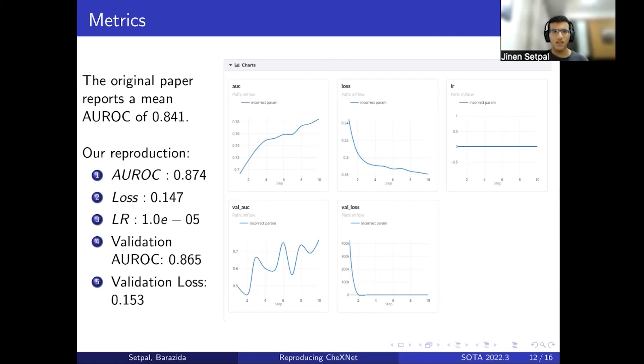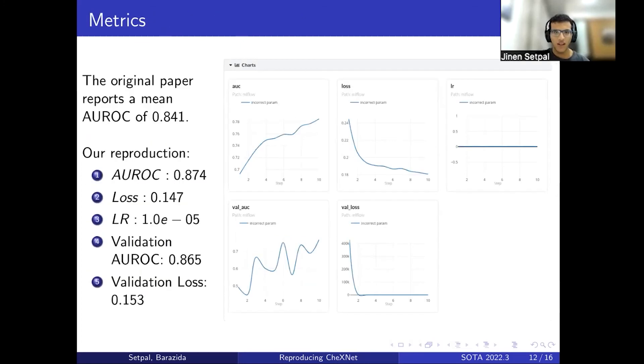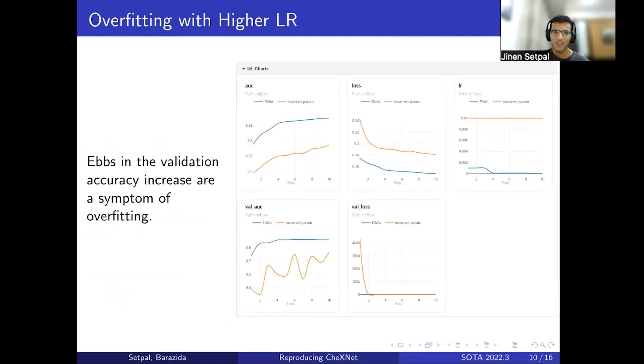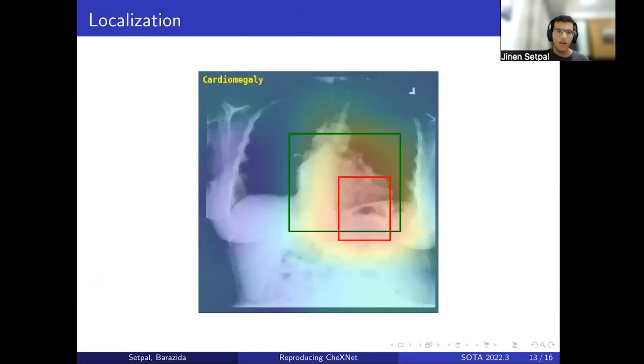Something interesting to note: I've actually gotten the wrong chart here—this is the chart with incorrect parameters, not the final one, which explains why the validation accuracy is fluctuating. This chart is more representative of the final results.